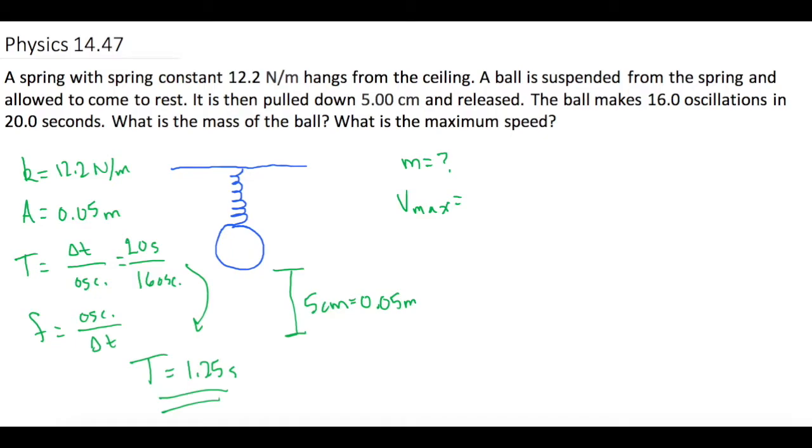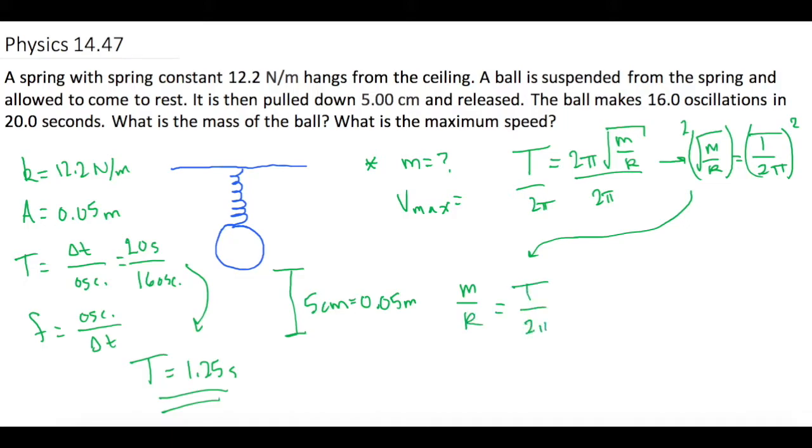So then I went to the end of the chapter summary and I asked myself which of these equations has mass in it, and then I said which of those equations has all the other stuff that I've been given. The one that I'm going to use is T equals 2 pi times the square root of the mass over spring constant. So now let's isolate m. If we divide both sides by 2 pi, that gives us m over k equals t divided by 2 pi. Now let's square both sides of the equation. So now we have m over k equals t divided by 2 pi squared.